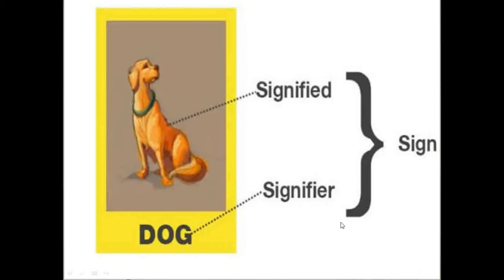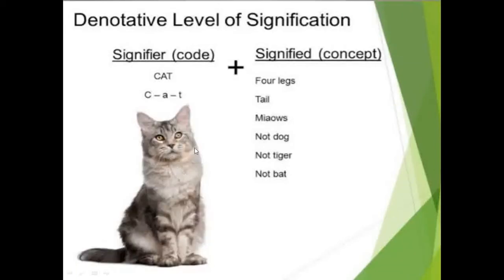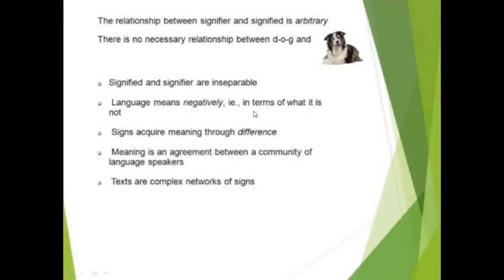The signifier code DOG and the concept would include four legs, tail, barks, not cat, not wolf. At a denotative level, the sign CAT would have both signifier code and signified concept. The code here would be C-A-T and the concept would be four legs, tail, meows — that is not a dog, that is not a tiger, that is not a bat. We realize that it is arbitrary — the signifier and signified come together not by any reason or logic; they are purely arbitrary.